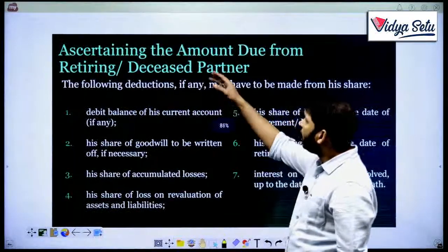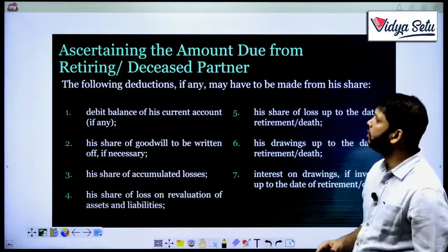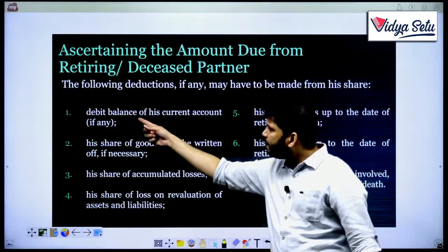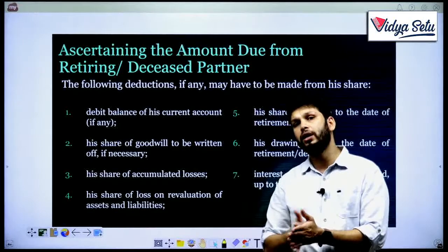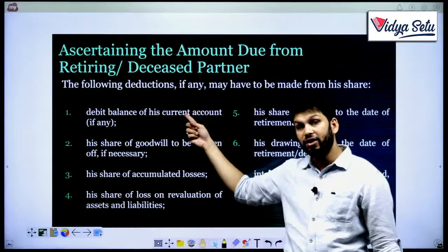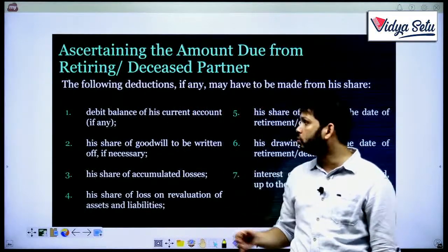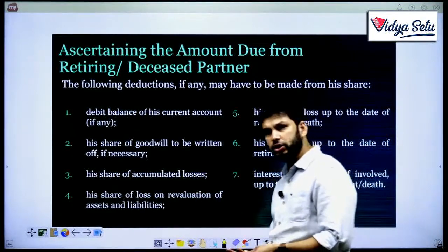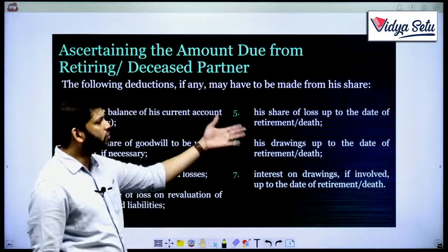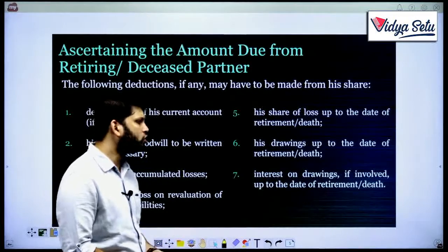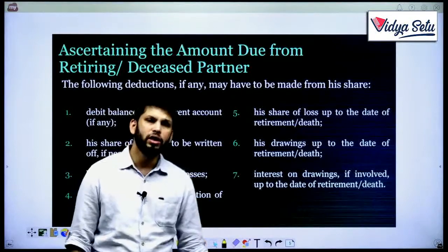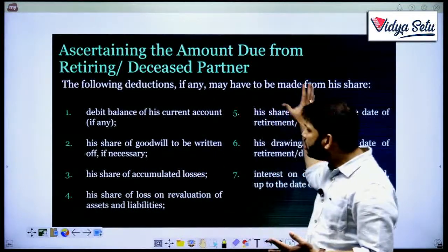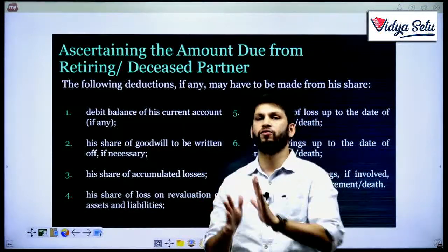Now, ascertaining the amount due from the retiring or deceased partner — the following deductions may have to be made from his share: the debit balance of his current account, if any (a debit balance means that amount will be taken from him or reduced from his capital); his share of goodwill to be written off if necessary; his share of accumulated losses; his share of loss on revaluation of assets or liabilities; his share of loss up to the date of retirement or death; and his drawings up to the date of retirement or death, or interest on drawings if involved.